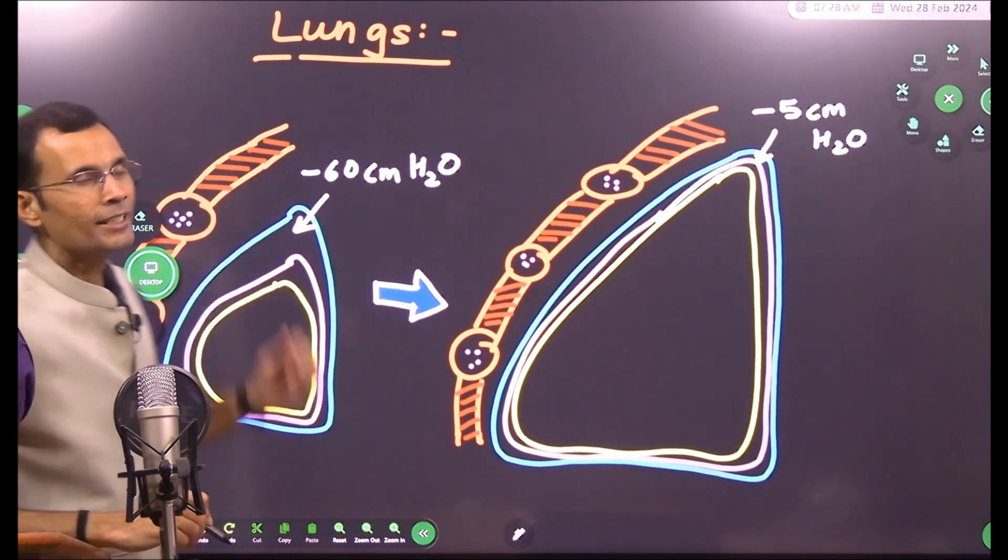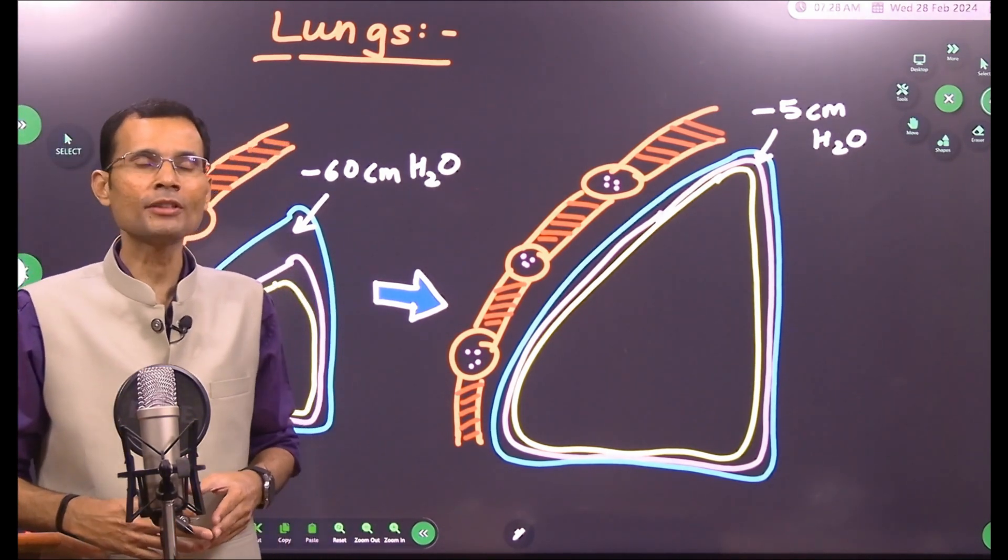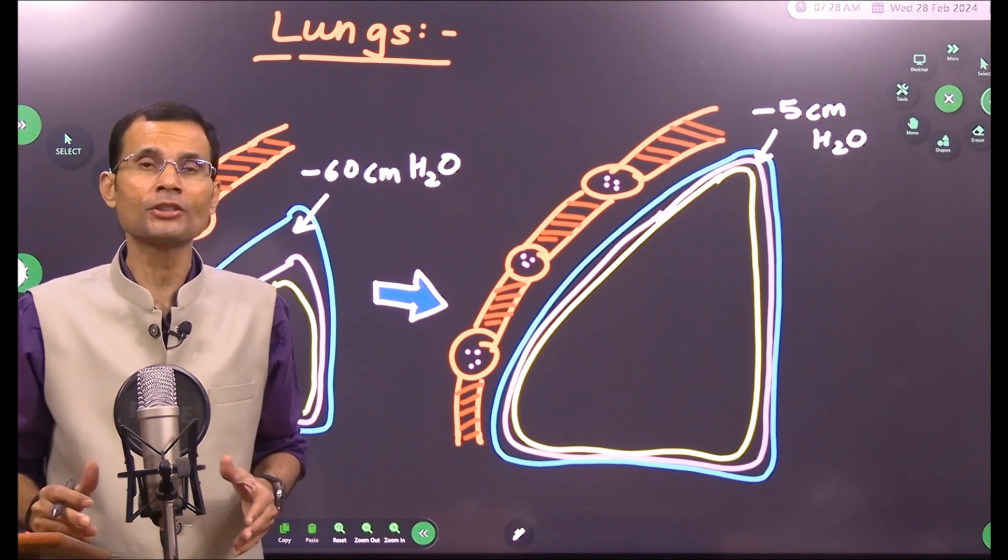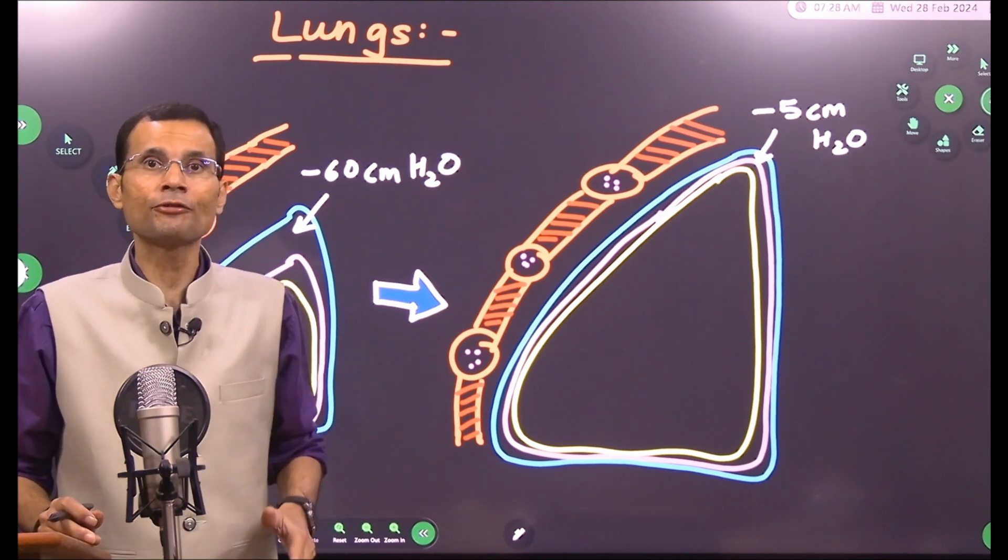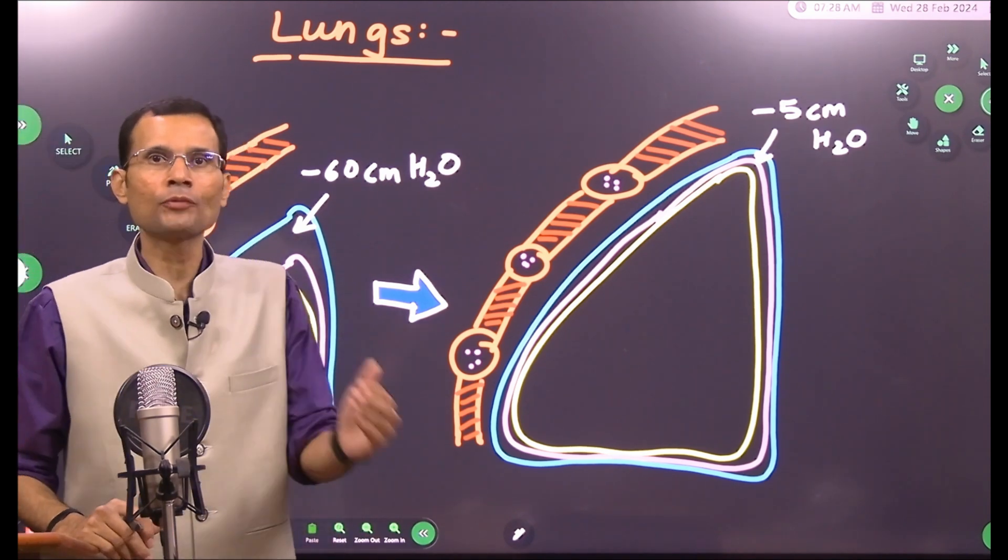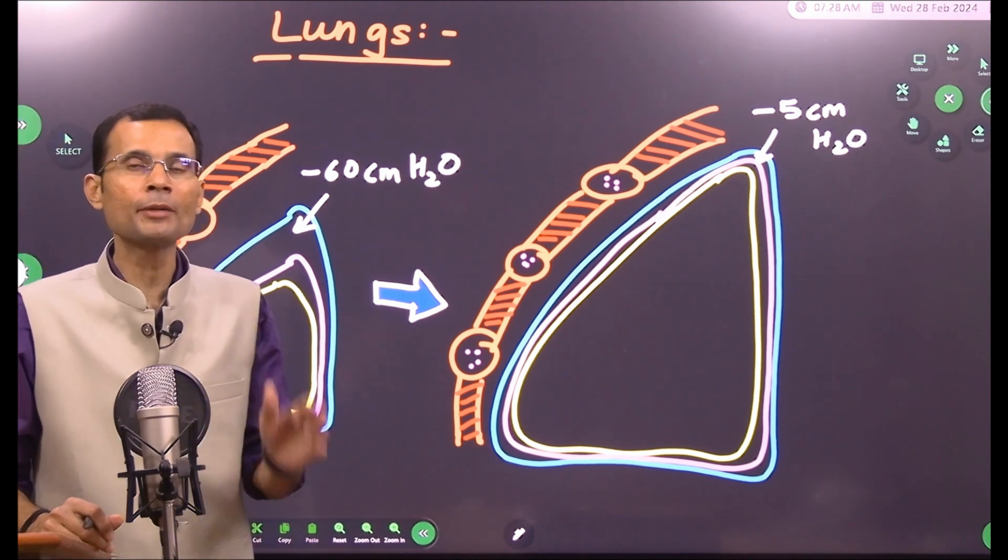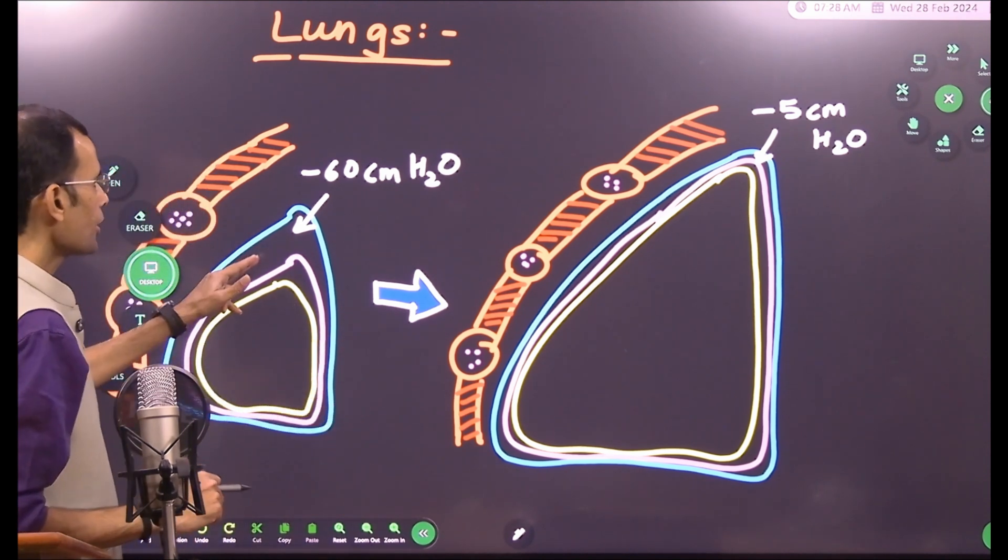Second is about the lungs. This question has been asked repeatedly: what is the intrapleural pressure or intrathoracic pressure at first breath? The first breath or first cry of the neonate generates almost minus 60 centimeters of water pressure around...